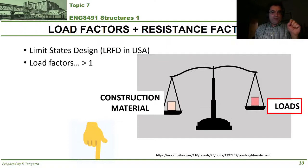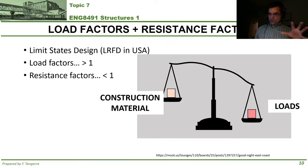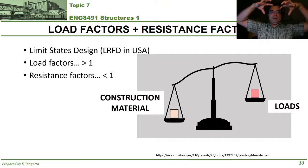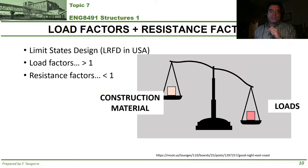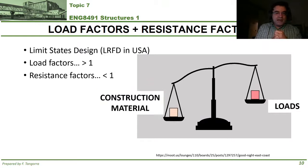You combine load factors with resistance factors, which are related to the construction material and are used to reduce the expected strength of the material. As such, resistance factors are typically less than one. So you're making the loads on the structure bigger than they actually are, and you're making the strength of the structure less than it is. By balancing these two, you design a structure that is safe — and this is the method used by structural engineers in Canada.